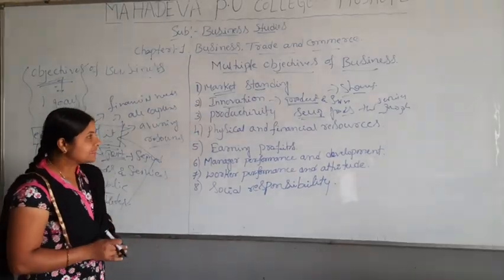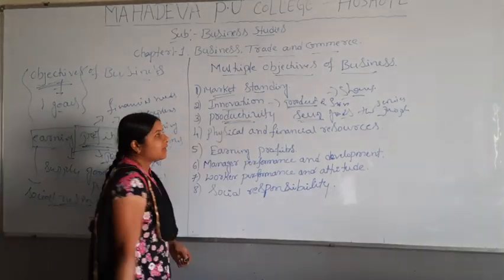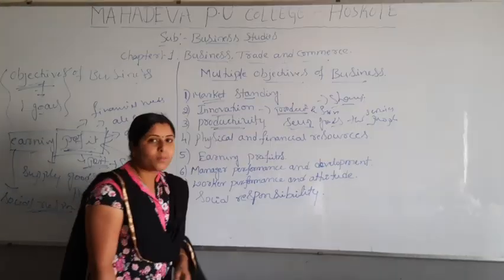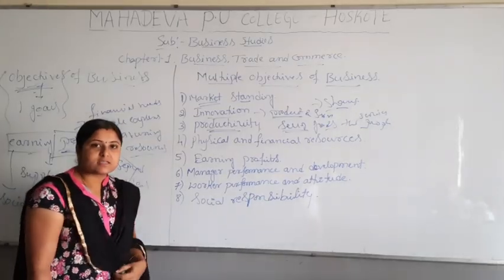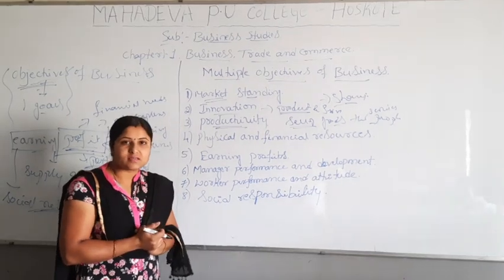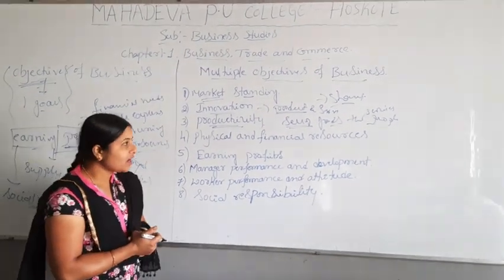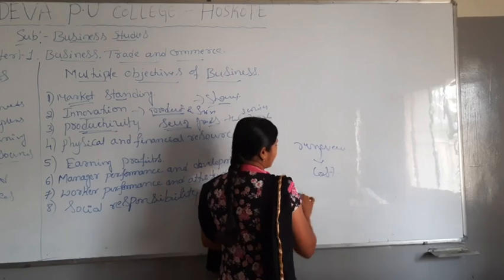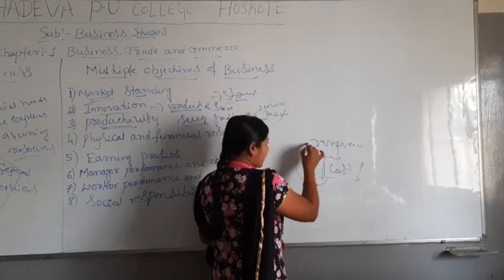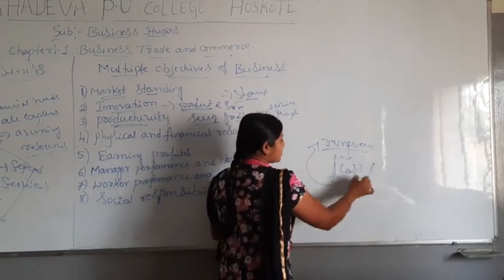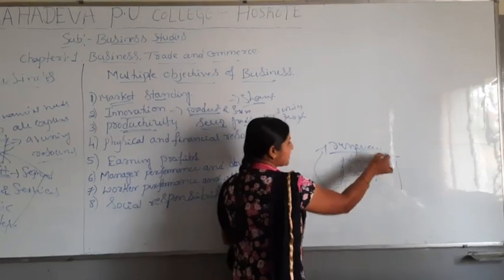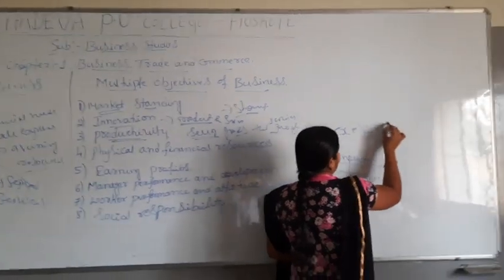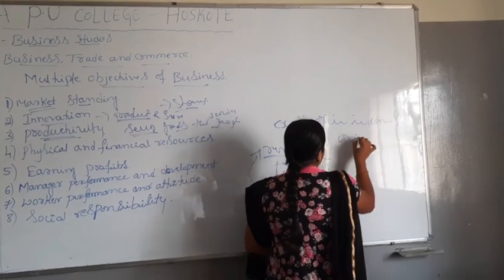The next objective is productivity. Productivity is also one of the very important objectives, and it depends upon the financial status and strength of a business. We are always trying to increase the revenue over the cost — how much your expenses are, and how much revenue you finally get from the business. This means the excess of income over expenditure.